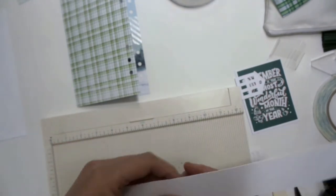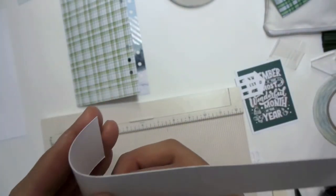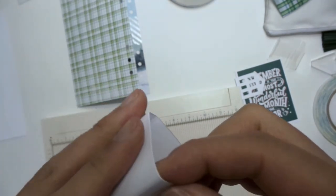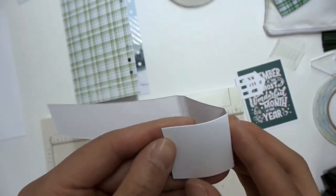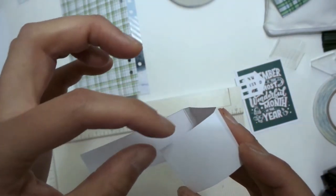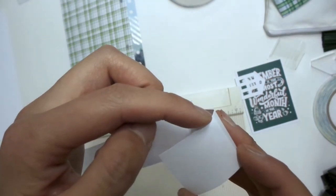So basically what we have here is, maybe I'll fold it so that it's a bit easier to see the score lines.